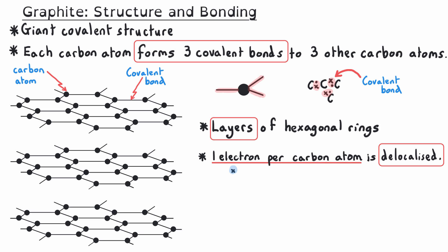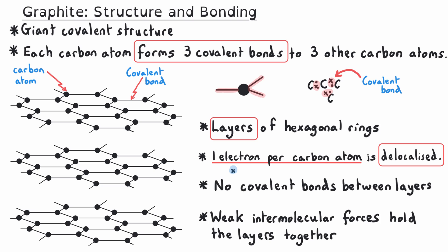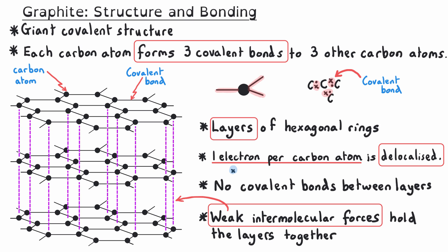In this structure, there are no covalent bonds between the layers — no black lines anywhere between the hexagonal layers. Instead, there are weak intermolecular forces that hold the layers together; I'm showing these as purple dashed lines on the diagram. These layers continue in both directions, and the intermolecular forces do as well. There are also more than three layers — I'm just showing a portion of the graphite structure here.